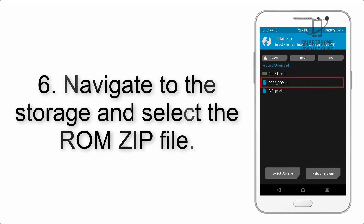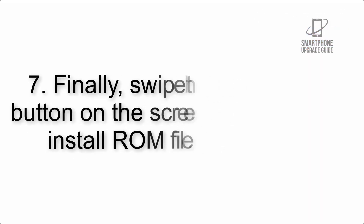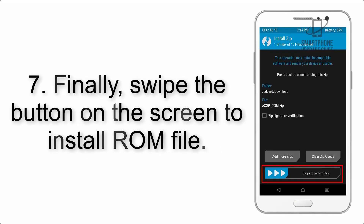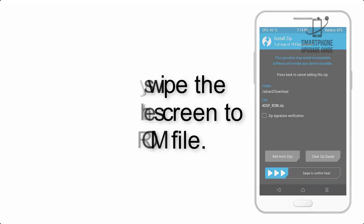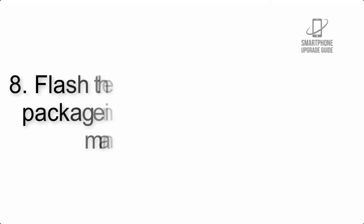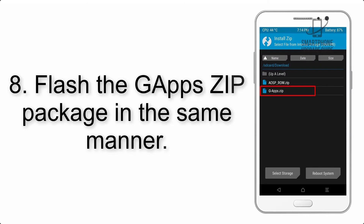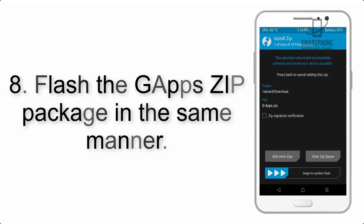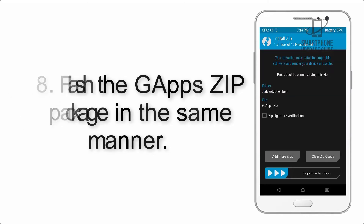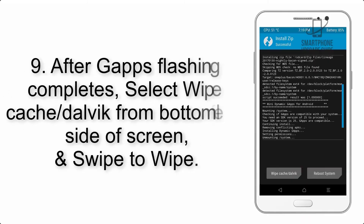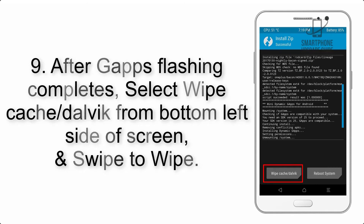Step 5: go back to the recovery main screen and tap on the Install button. Step 6: navigate to the storage and select the ROM zip file. Step 7: swipe the button on the screen to install the ROM file. Step 8: flash the GApps zip package in the same manner.